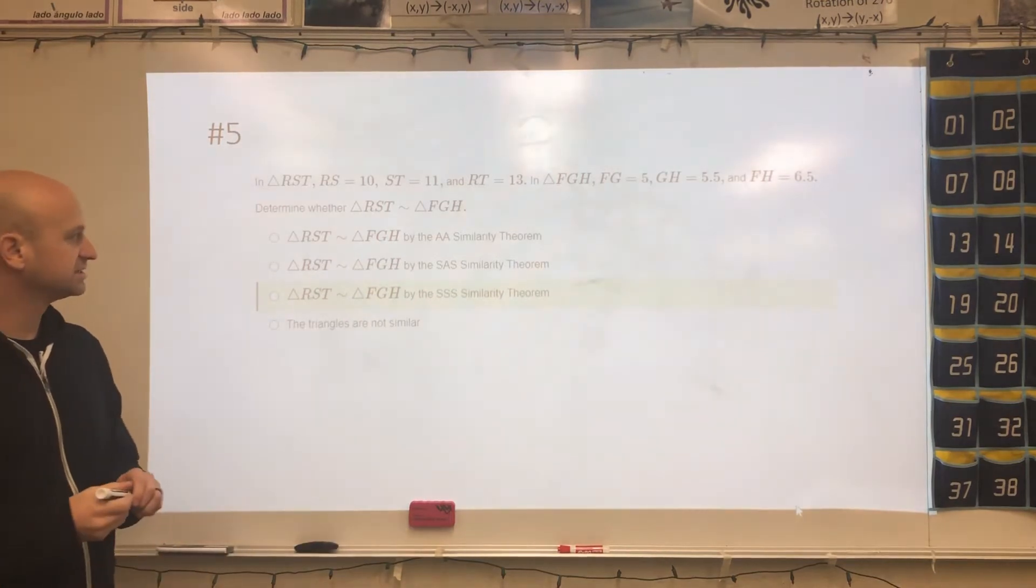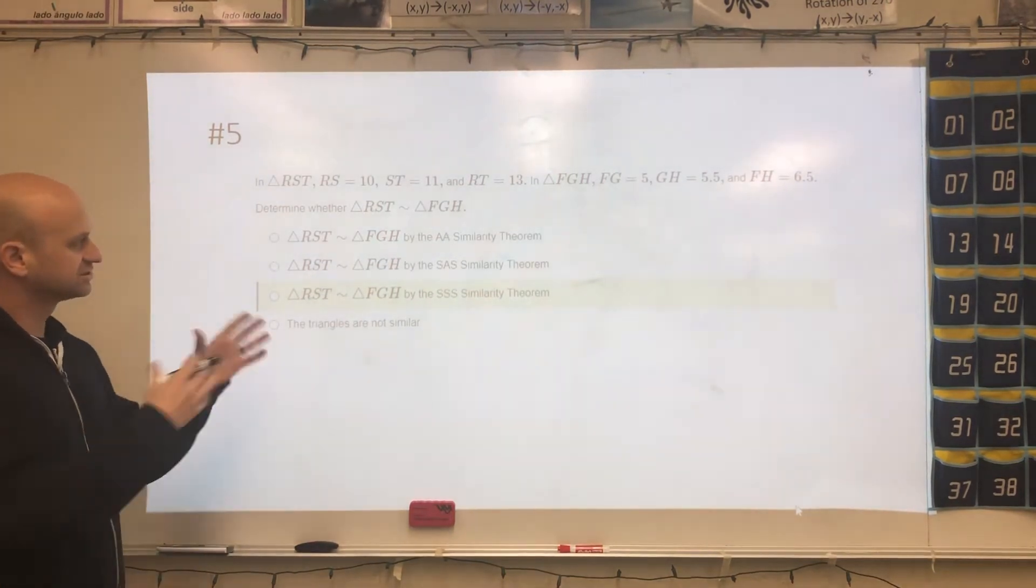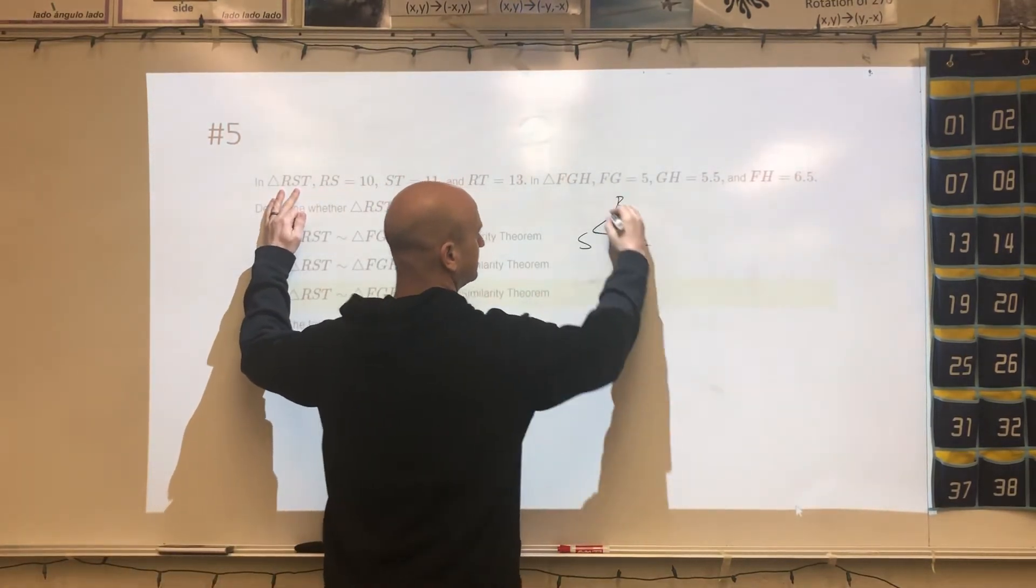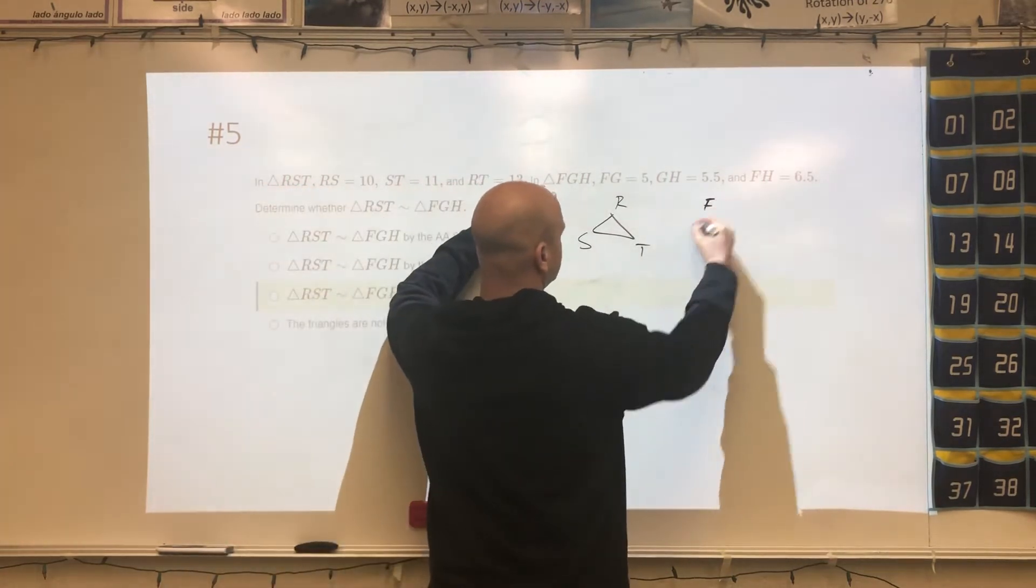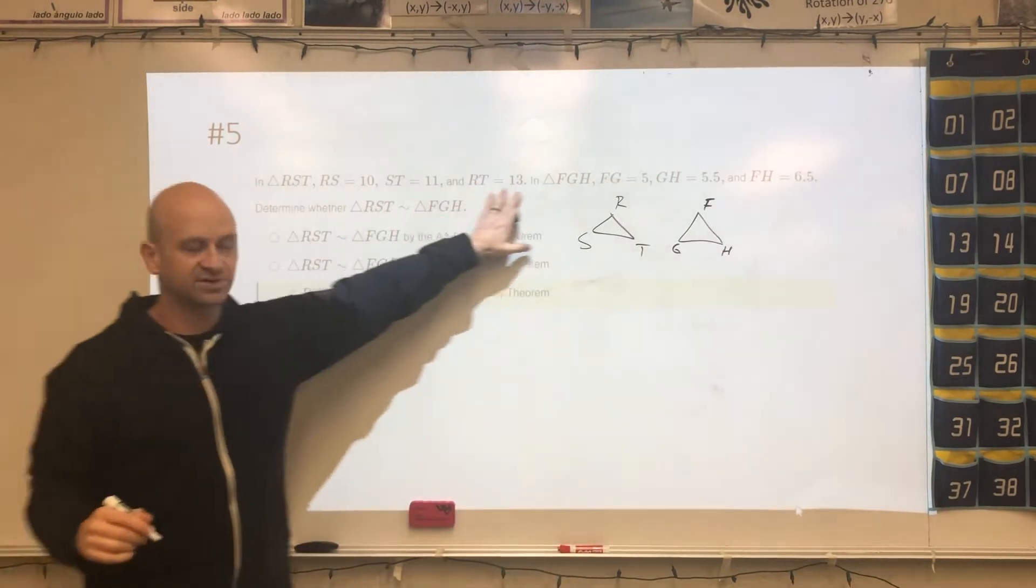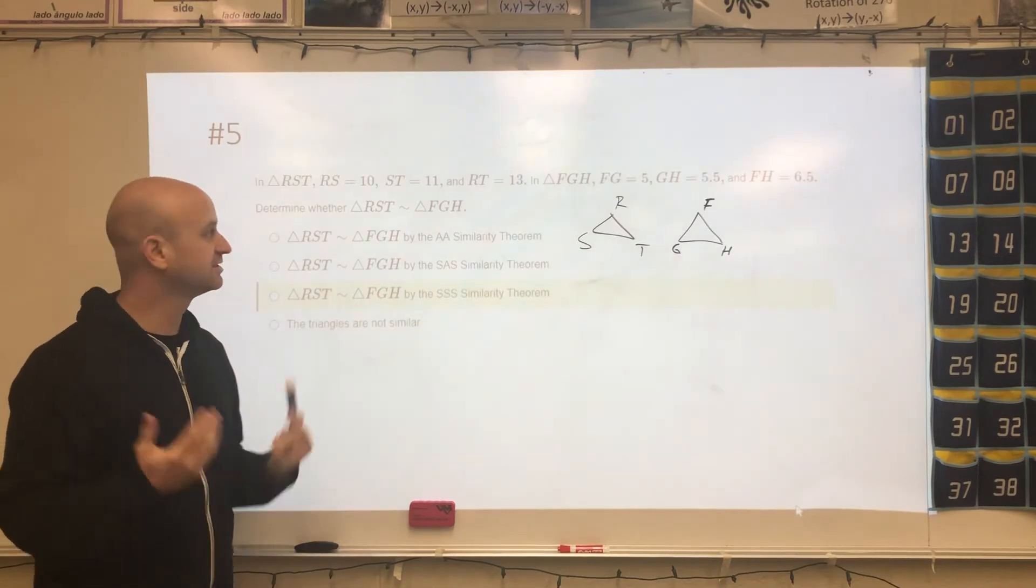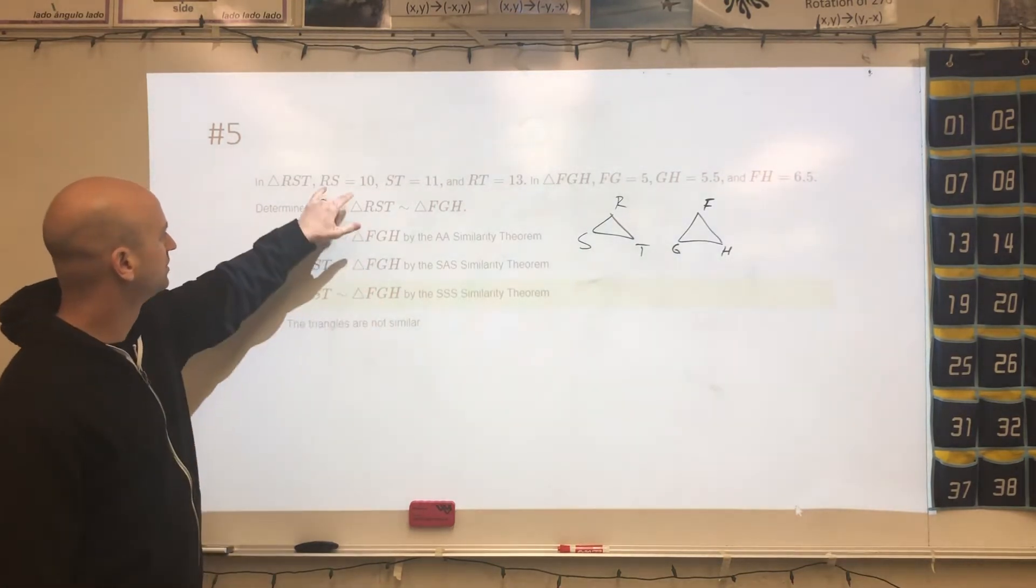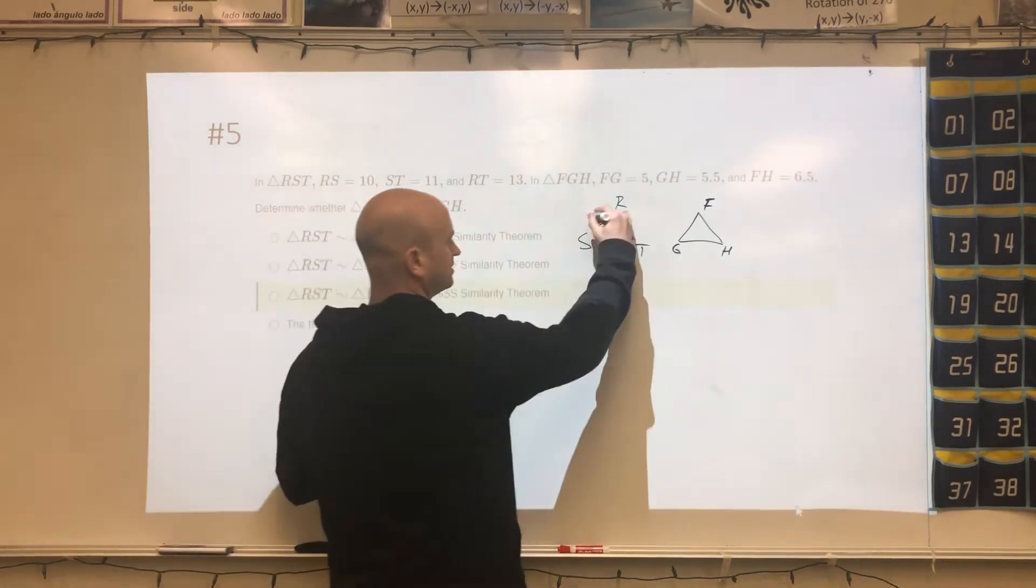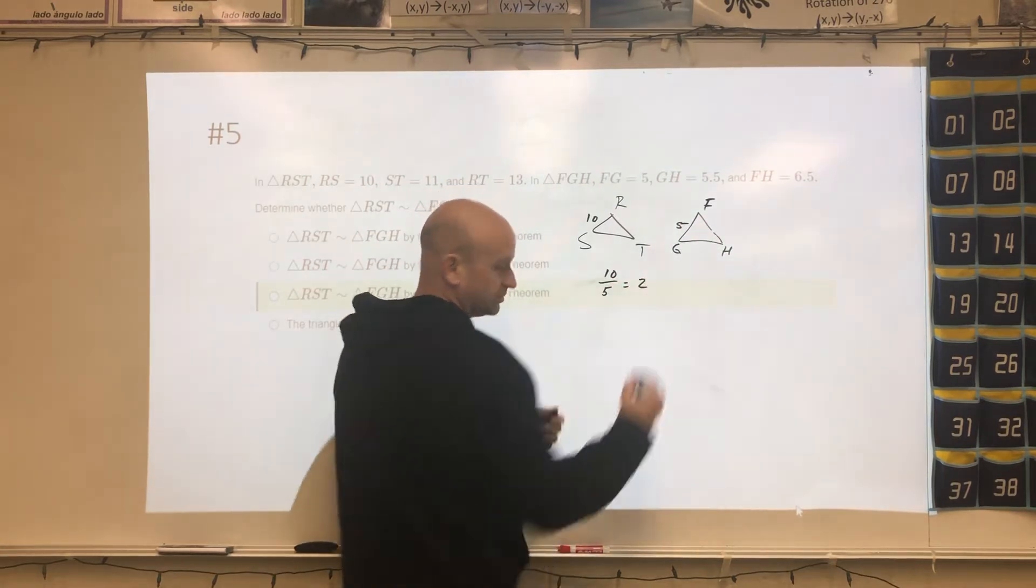All right, in this next one, what I would do in this case is draw out the figure, just to make sure things match up. So we have one triangle RST, and then the other triangle would be FGH. And then you can enter in the values of the sides. And then because three sides are given, we have to prove that they're proportional. So RS would go with FG. So RS is 10, and this is 5. And if we divided those two, we would get 2.